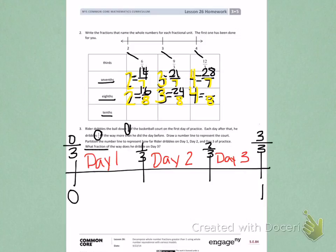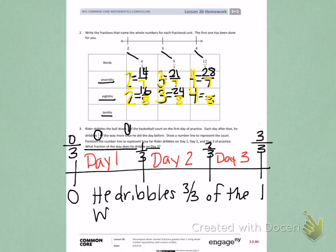So when I look at my question, what fraction of the way does he dribble on day 3? He dribbles 3 thirds of the way on day 3.